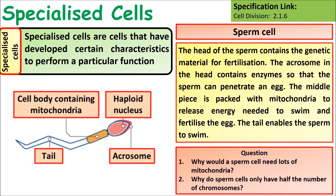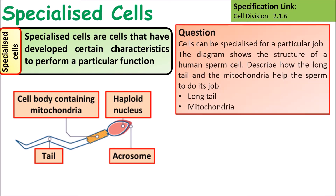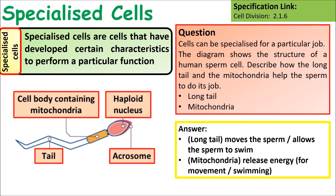Think about why sperm cells need lots of mitochondria and why sperm cells only have half the number of chromosomes. Exam question: describe how the long tail and mitochondria help the sperm cell do its job. The long tail enables it to swim so it can move, and mitochondria release the energy required by the tail for movement.